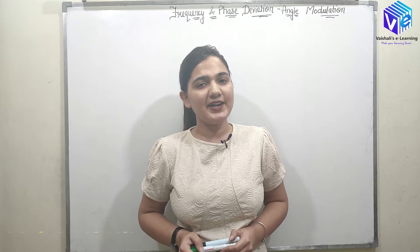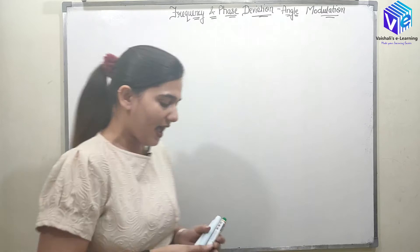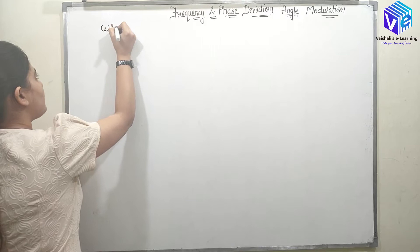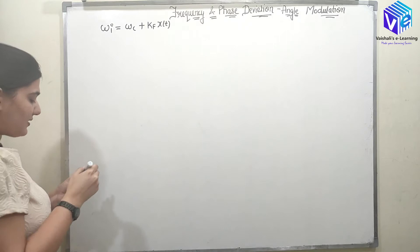Hello friends, welcome back to this video on analog communication. In this video we are going to discuss the frequency deviation and phase deviation in angle modulation. We have studied till now that the instantaneous frequency was represented by omega_i, which was equal to omega_c plus k_f into x(t).